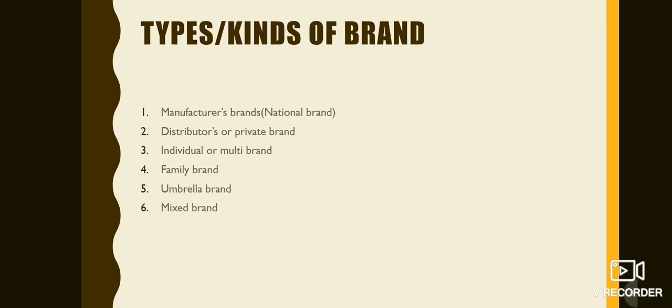That is the umbrella brand. The next type is mixed brand. Some companies use individual brands for some of their products and family brands for others. They may use both individual brands for some product lines and family brands for others. These are the types or kinds of brands: manufacturer's brand, distributor's or private brand, individual or multi-brand, family brand, umbrella brand, and mixed brand.